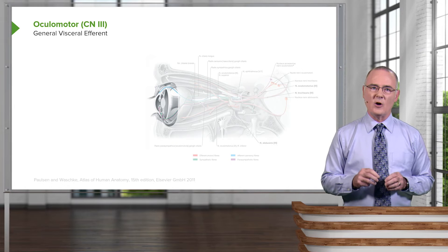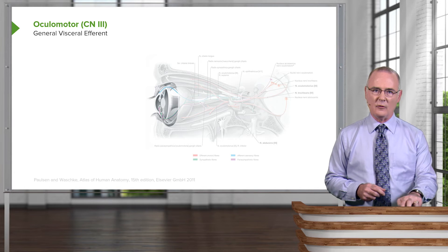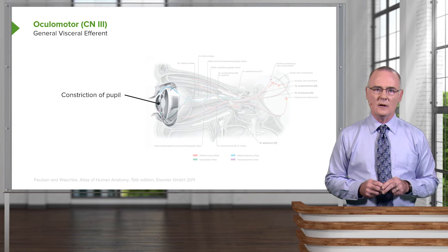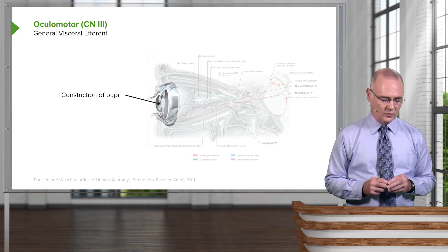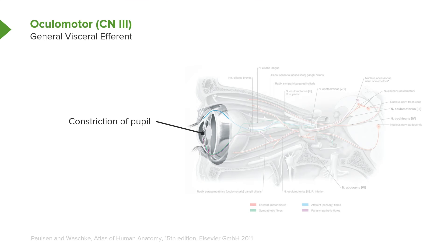General visceral efferents are responsible for two functions. First, these fibers will innervate the sphincter muscle of the pupil, causing it to constrict. Second, it will cause contraction of the ciliary muscles, which will allow for accommodation of the lens for near vision.